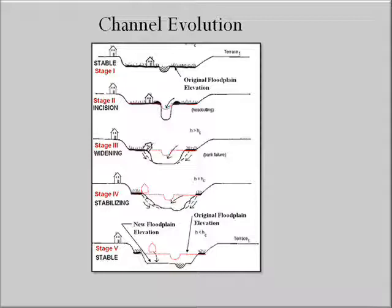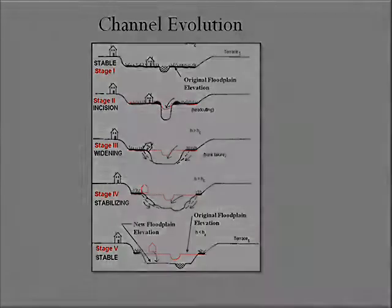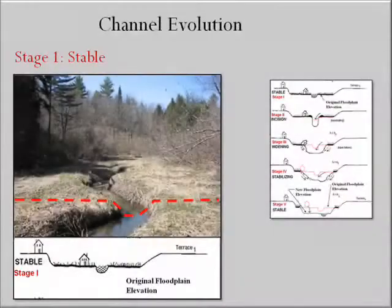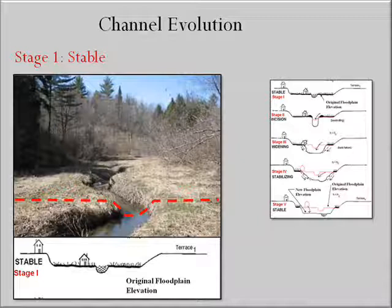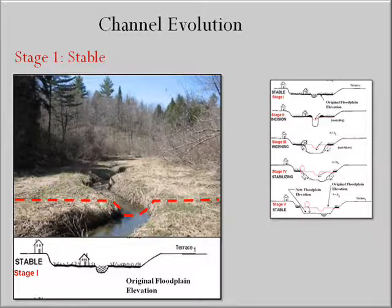The series of erosional and depositional processes that occur as the channel regains its equilibrium condition is referred to as channel evolution and can be broken into five stages. In stage one, the river is in equilibrium. The channel has the right combination of depth, slope, and roughness to generate the flow power required to transport its sediment load. The channel is also well connected to its floodplain, upon which it can spill and dissipate the erosive energy associated with high flows.